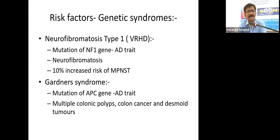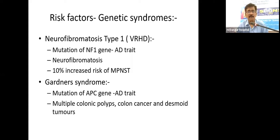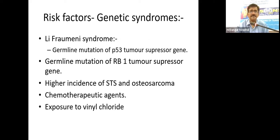There are defined genetic syndromes associated with sarcoma development. Neurofibromatosis type 1 (von Recklinghausen disease) involves mutation of the NF1 gene transmitted in an autosomal dominant pattern, with a 10% increased risk of malignant peripheral nerve tumors. Gardner syndrome involves mutation of the APC gene, transmitted as autosomal dominant, associated with colonic polyps, colon cancer, desmoid tumors, and sarcomas.